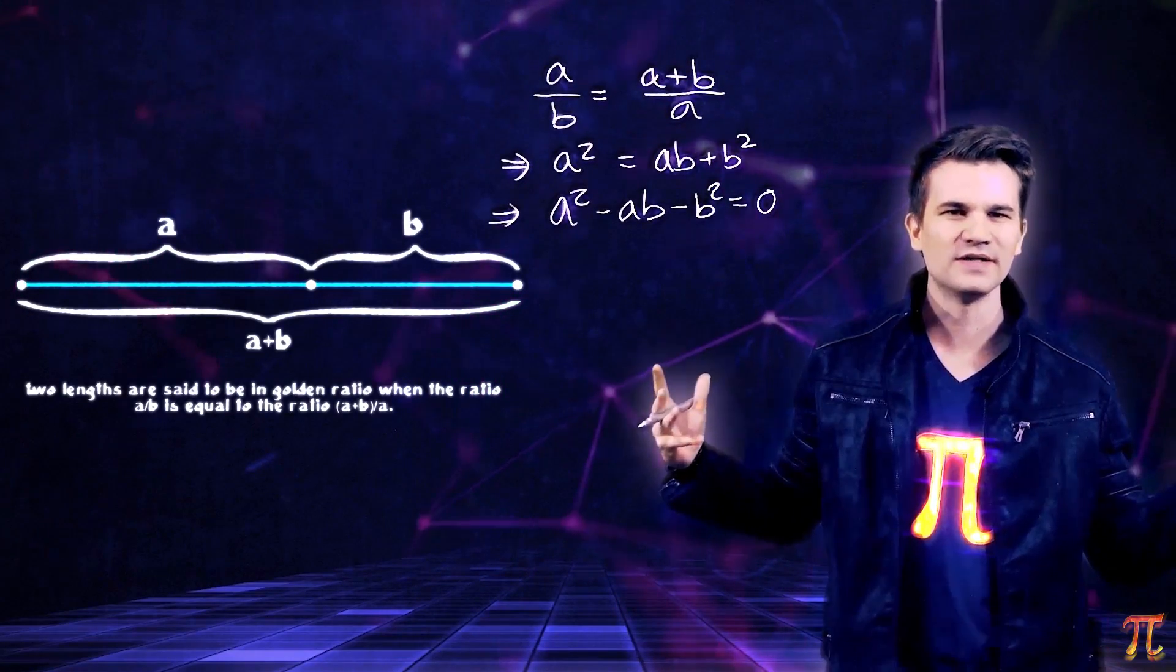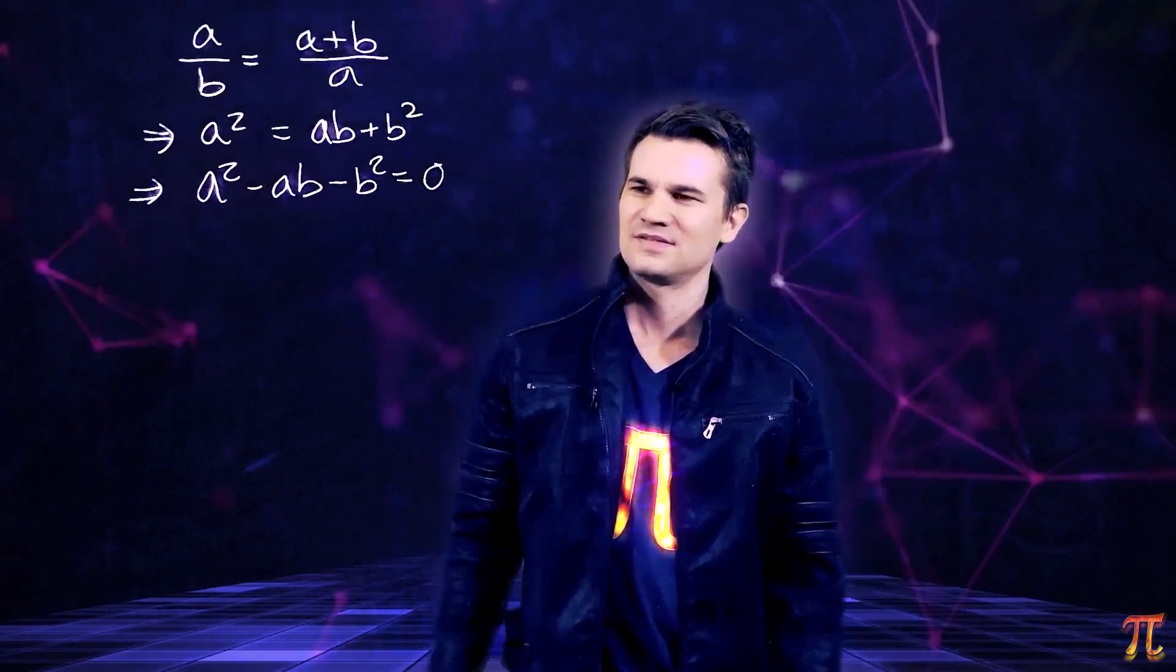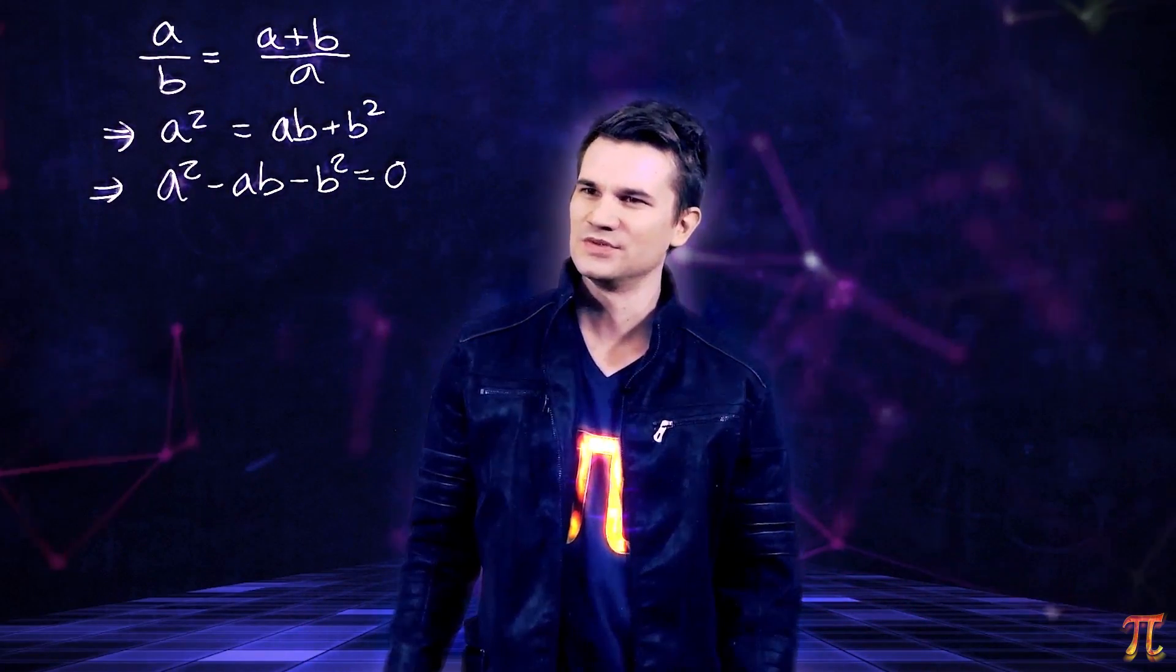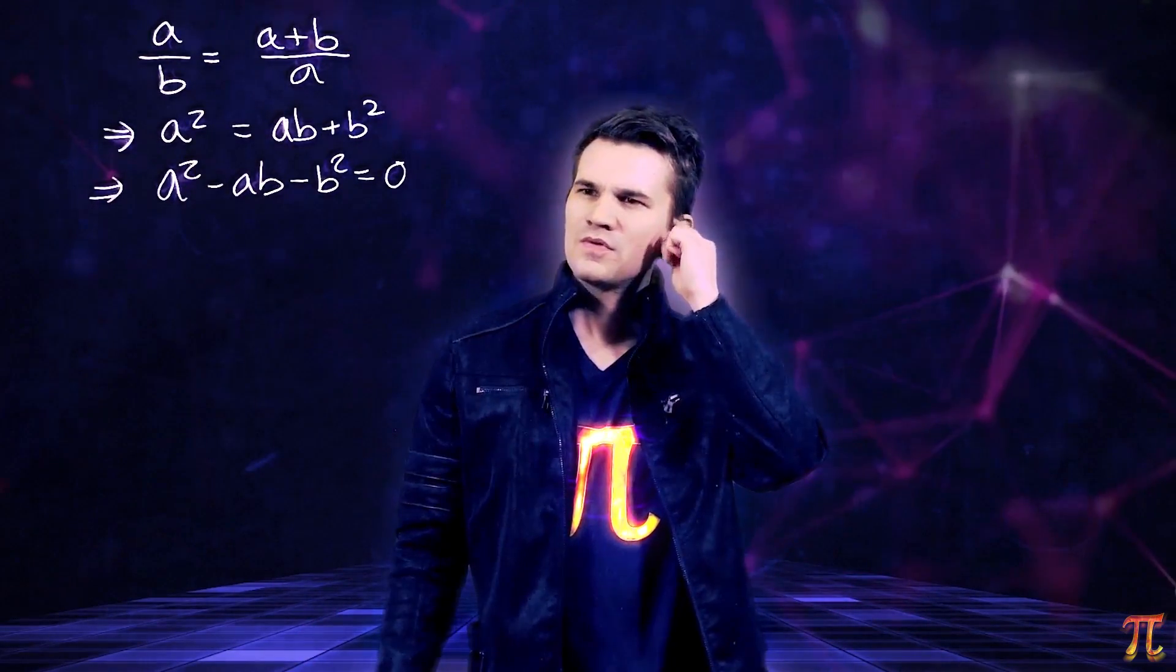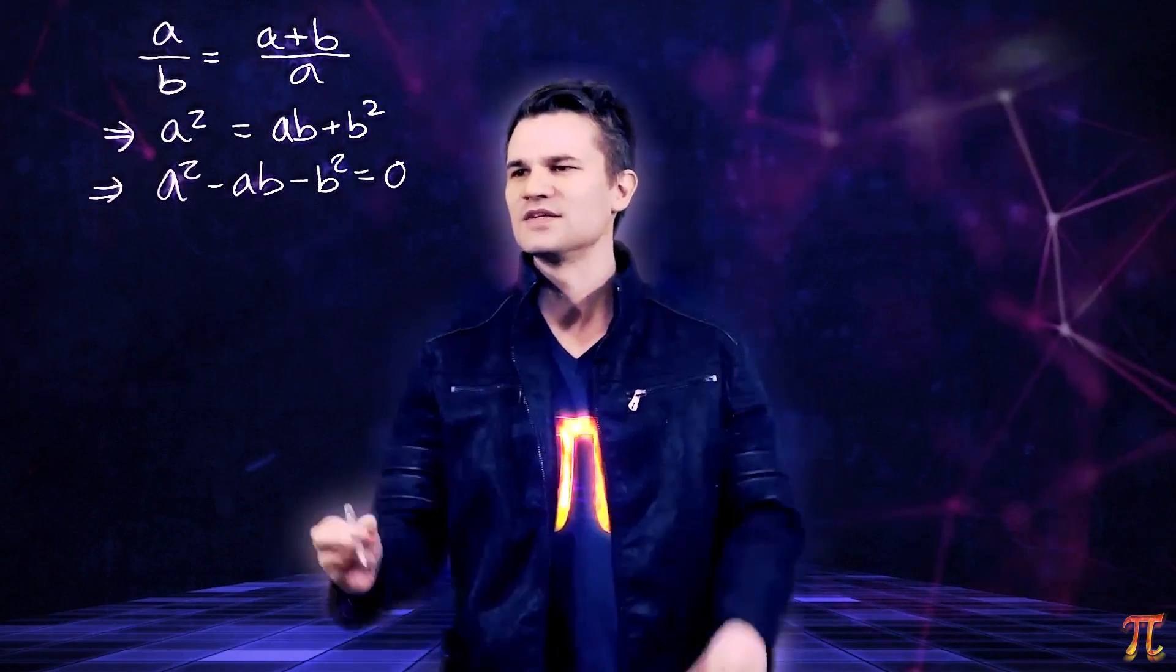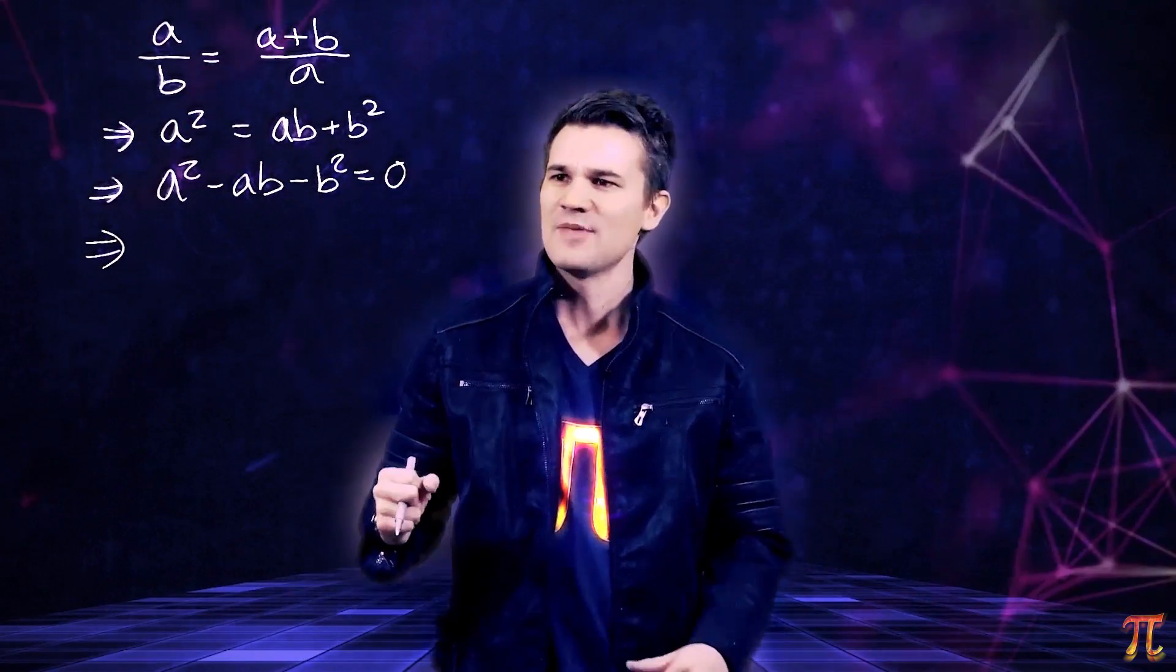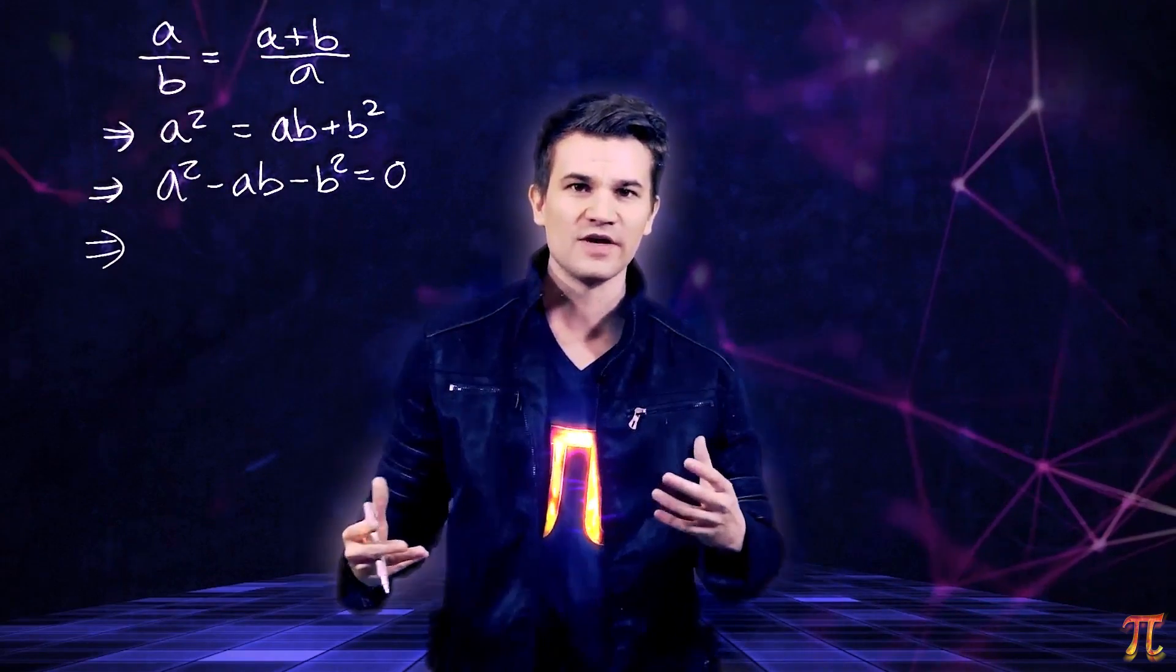So what can we do? Well, I guess we could rearrange this so that it looks like a quadratic in a over b. I mean, that's what we want to find, right? a over b.